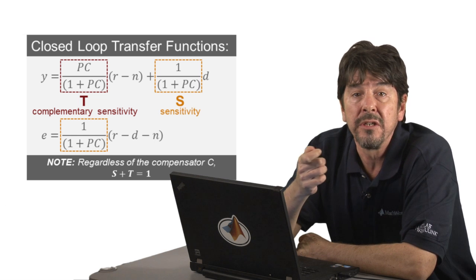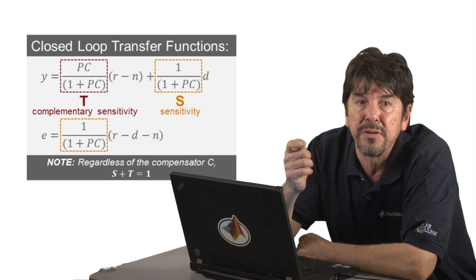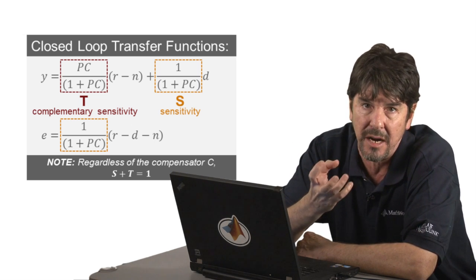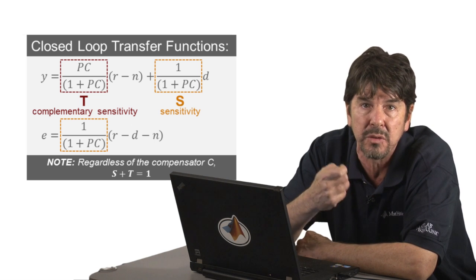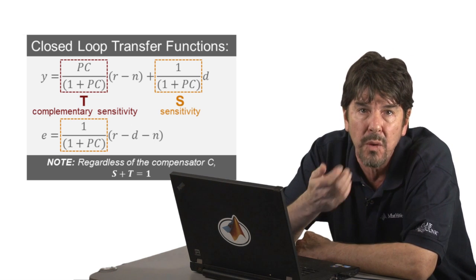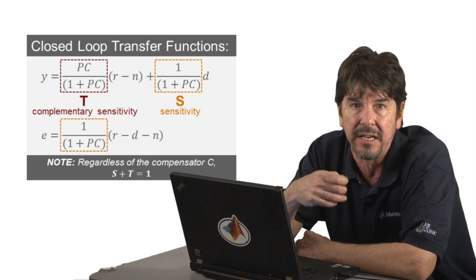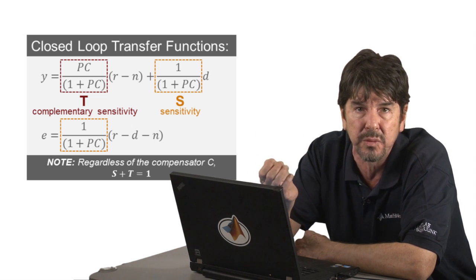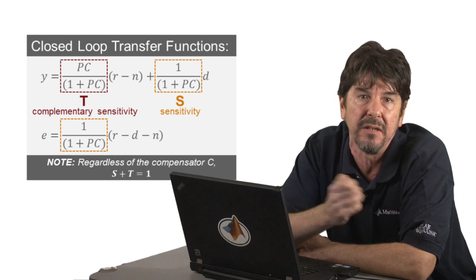It is worth noticing that these two transfer functions are not independent from each other, so they cannot be shaped arbitrarily. S and T will always add to 1, PC plus 1 over 1 plus PC, regardless of C. So as control engineers, we always need to be aware of the trade-offs between these two.